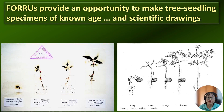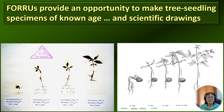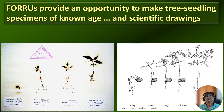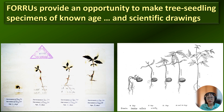FORRU has worked with a lot of seedlings, so one good thing we also do is keep seedling specimens. In these two pictures, the left-hand side shows a voucher specimen of the seedling from germination to a small true seedling, with the known age of each seedling recorded. On the right-hand side is a scientific drawing of the seedling at different ages. If you keep seedling specimens like this, it will be very helpful for people later on when they have to work with seedlings and need to know how seedlings of each different species look.